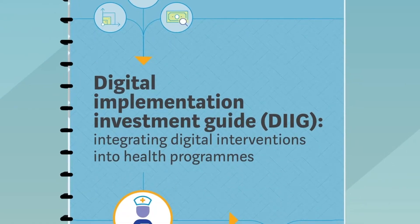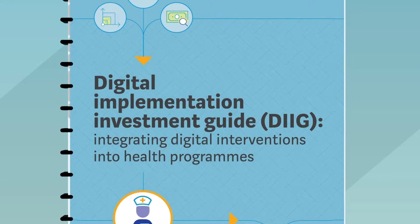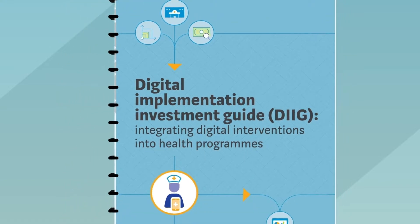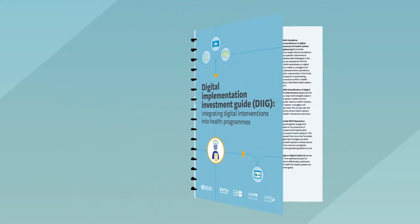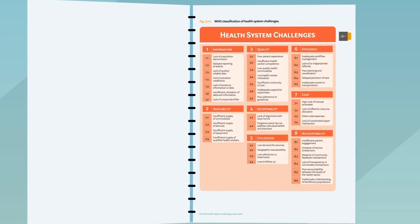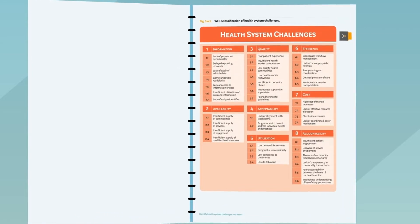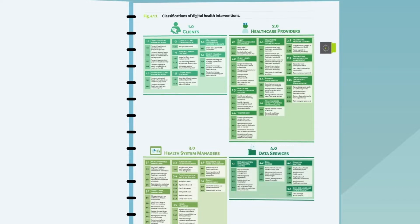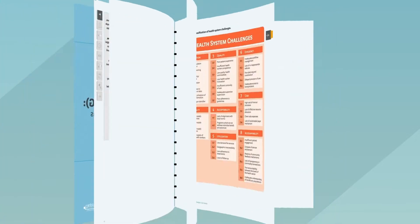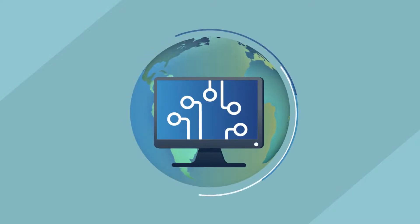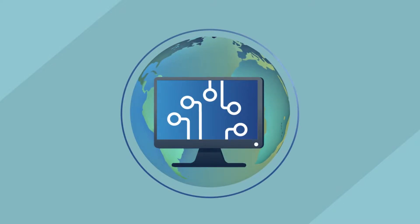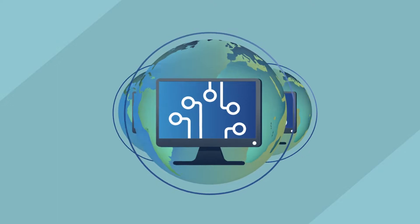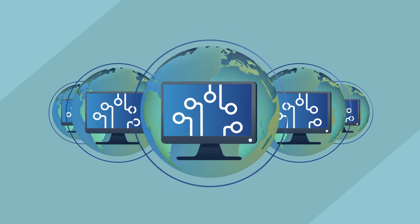The WHO Classification Framework in the Digital Implementation Investment Guide has identified 39 potential health system challenges and over 80 specific ways that digital tools can improve health services. These interventions are parceled in a variety of digital health global goods. Each video in this series will highlight a specific global good.